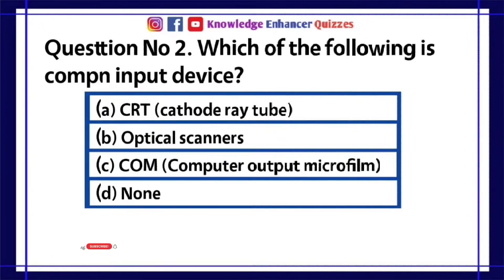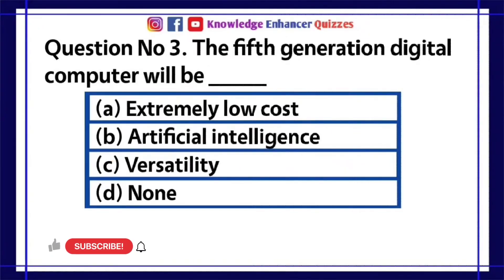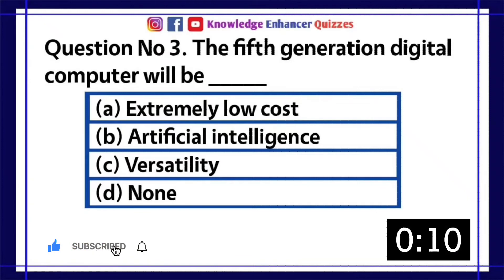Question number 3. The 5th generation digital computer will be dash. A. Extremely low cost. B. Artificial intelligence. C. Versatility. D. None.